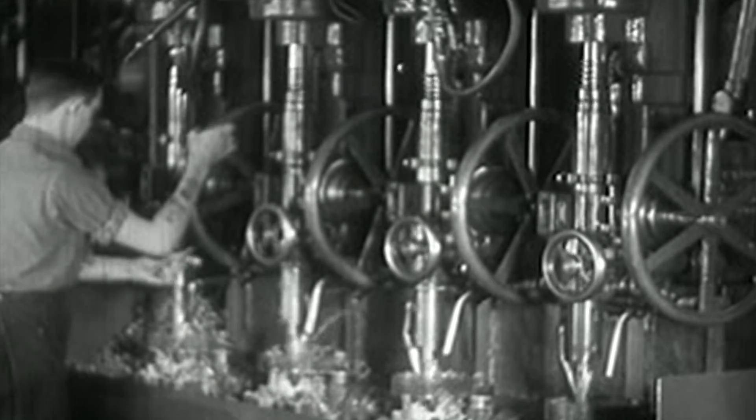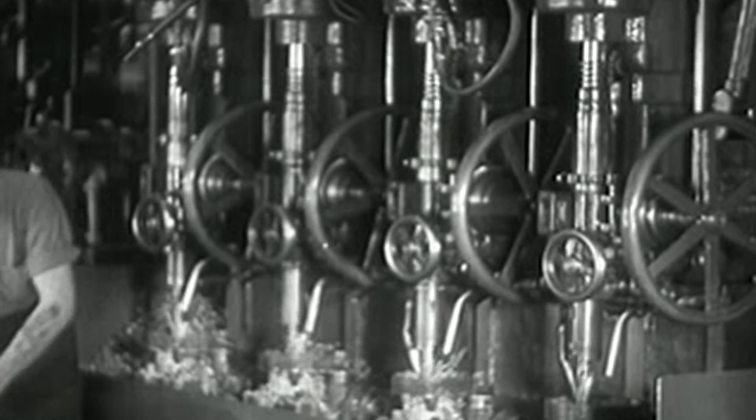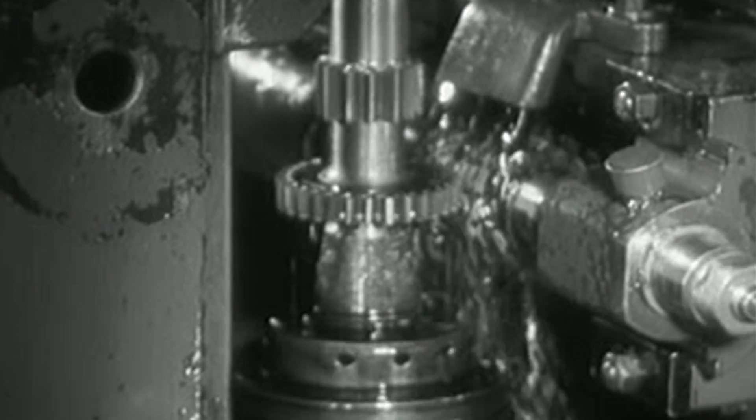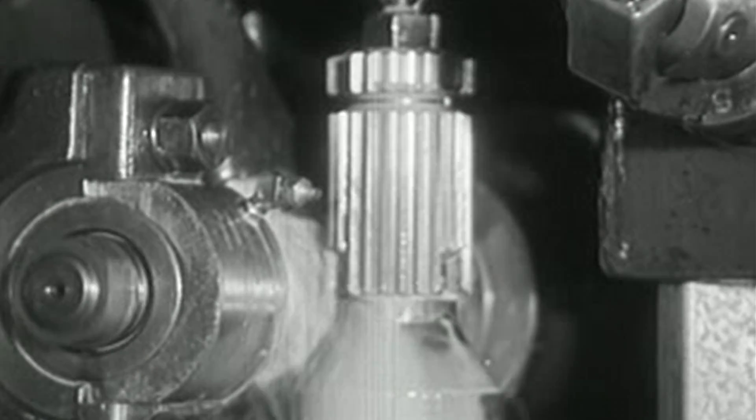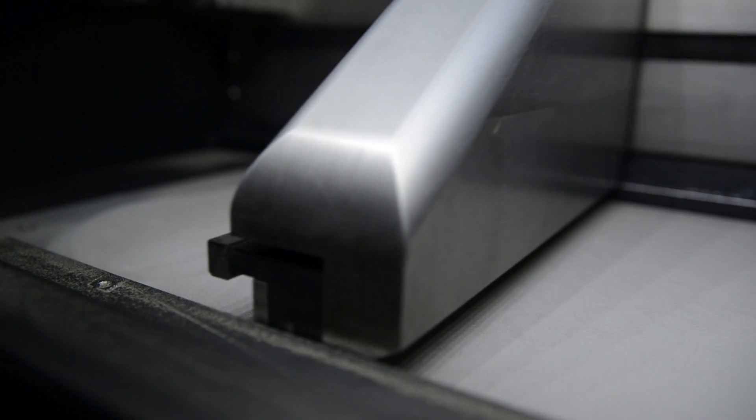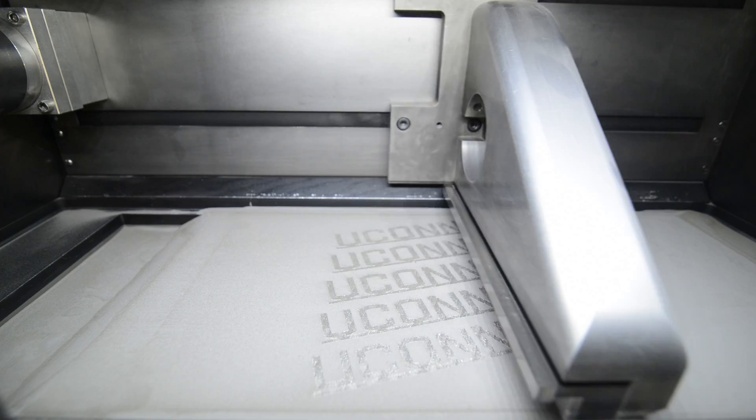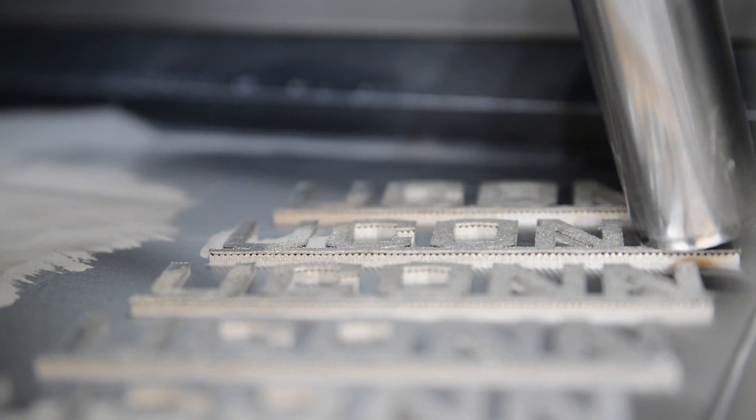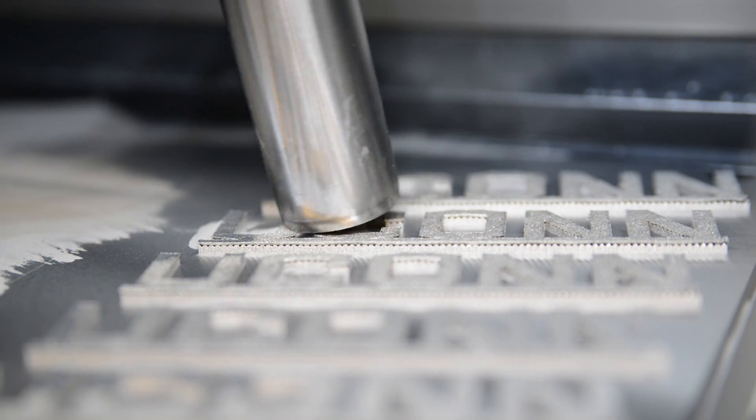In a conventional manufacturing process one would take a block of metal and machine away the material to get to the final part shape. So you're subtracting material with a lot of waste to make one part. Additive manufacturing is a joining of materials usually layer by layer. It is a green technology because it reduces the amount of raw material required.